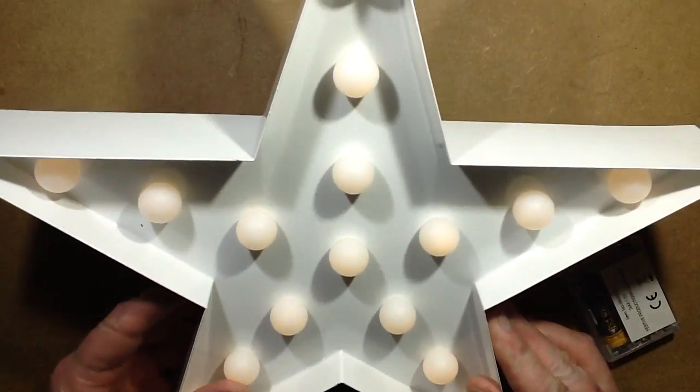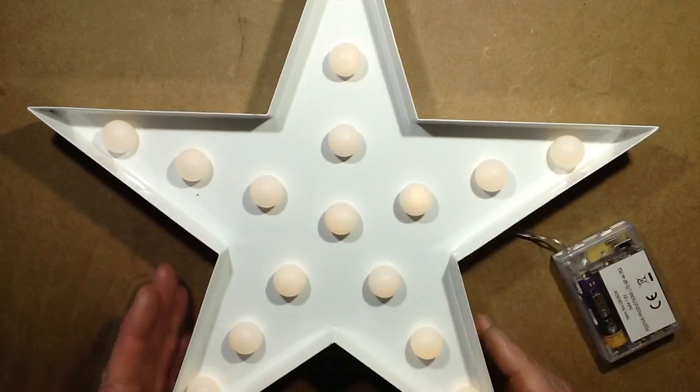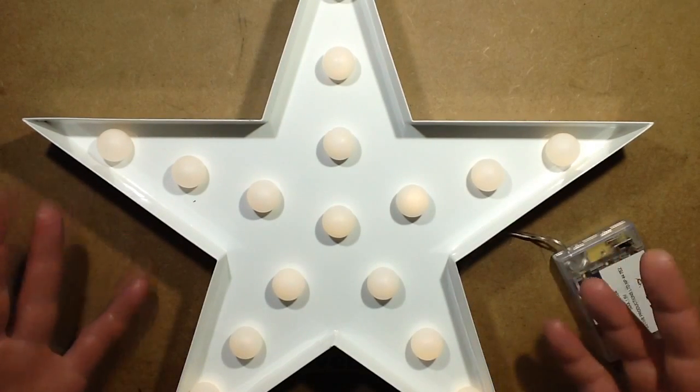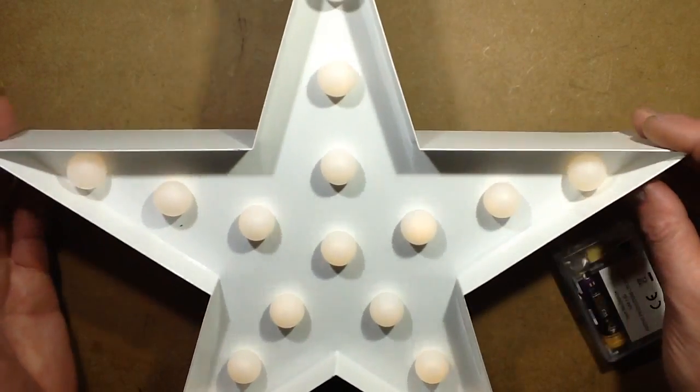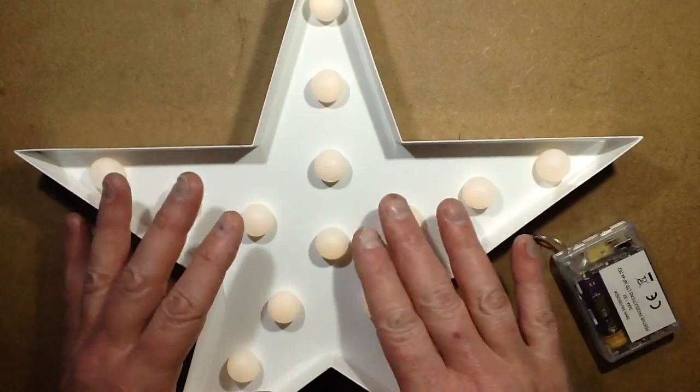With Christmas fast approaching, all the shops are starting to get their Christmas stuff in. A shop in Douglas on Isle of Man called TK Maxx, a big chain of stores, had these illuminated stars. These are basically illuminated globes that are lit by LED.